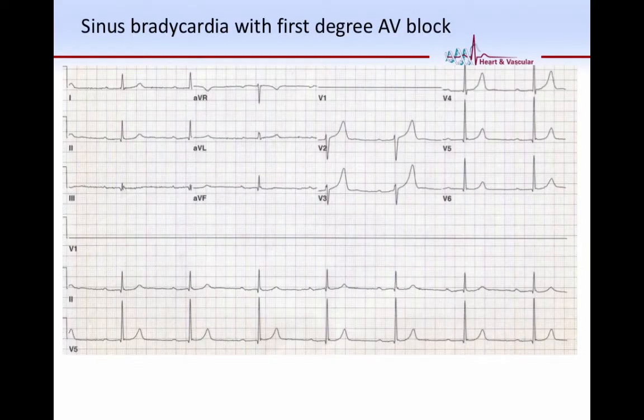This slide is an example of first-degree AV block. I want to focus on this lead across the bottom here, which shows a P wave followed by a QRS, another P wave followed by a QRS, and so forth. You can see that for every P wave, there's a QRS. However, the PR interval is a little bit long. So this is an example of first-degree AV block.